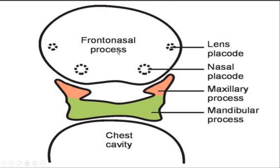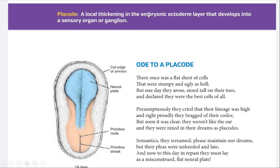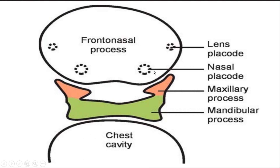The frontonasal process is the downward proliferation of the ectoderm of the forebrain. The maxillary and the mandibular processes are derivatives of the first pharyngeal arch. Hence all these structures are derived from the ectoderm or the cranial neural crest cells. At the fifth week of development, pairs of ectodermal thickenings develop on the frontonasal process called the nasal placode, which forms the olfactory ganglion.